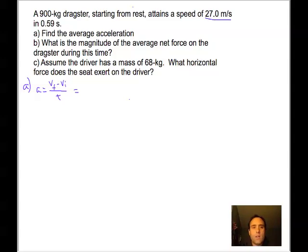we have the final velocity Vf equal to 27 meters per second. The initial velocity Vi is from rest, so that's 0 meters per second. And the time that this happens over is 0.59 seconds. So making some substitutions, simply 27 meters per second minus 0 meters per second over 0.59 seconds.